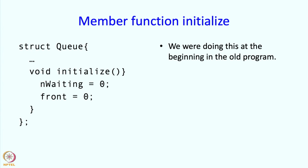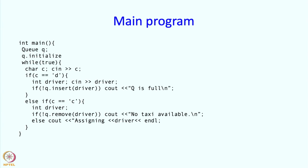We were doing this at the beginning in the old program, but now notice that it has gone into a member function. The internals of what of queue are not really visible, and that's a good thing in the sense that this code is a high level code. The internals are being manipulated in the member function calls.